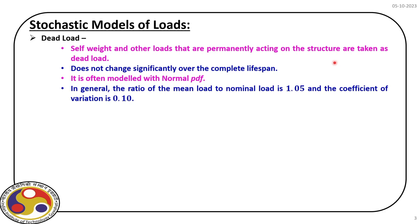Previous data analysis has shown that dead load normally follows a Gaussian distribution or normal PDF. A general recommendation is that the mean load to nominal load ratio should be 1.05 and the coefficient of variation is around 10%. This is for RC structures; for other special structures, these figures may change, requiring proper statistical analysis. In absence of that data, we can use these numerical figures for our design.